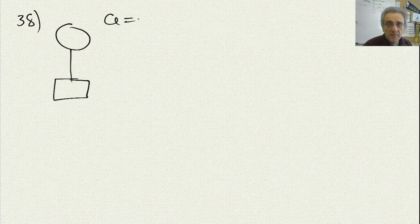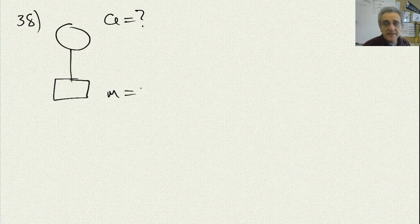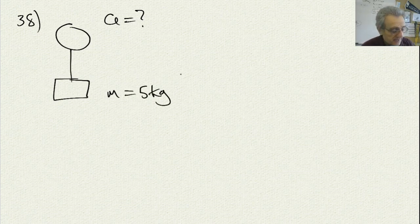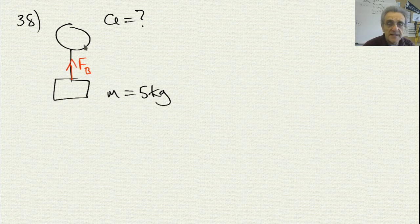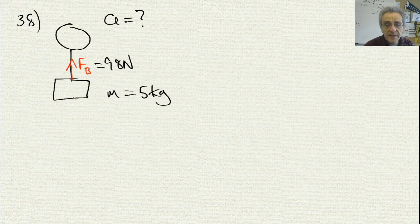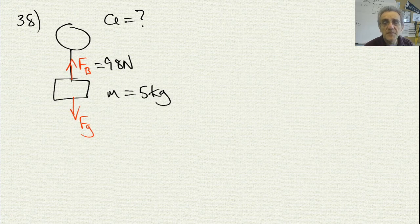First, let's write down what we're looking for: the acceleration. And let's write down what we're given: mass equals 5 kilograms, and there is an upward force, so the force of the balloon equals 98 newtons. In order to do this, we need to draw the free body diagram of the package, which I've done.